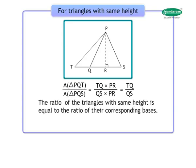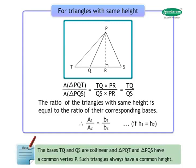Hence, the ratio of the areas of triangles with the same height is equal to the ratio of their corresponding bases. Therefore, if H1 is equal to H2, then A1 upon A2 is equal to B1 upon B2. Note: the bases TQ and QS are collinear, and triangle PQT and triangle PQS have a common vertex P. Such triangles always have a common height.